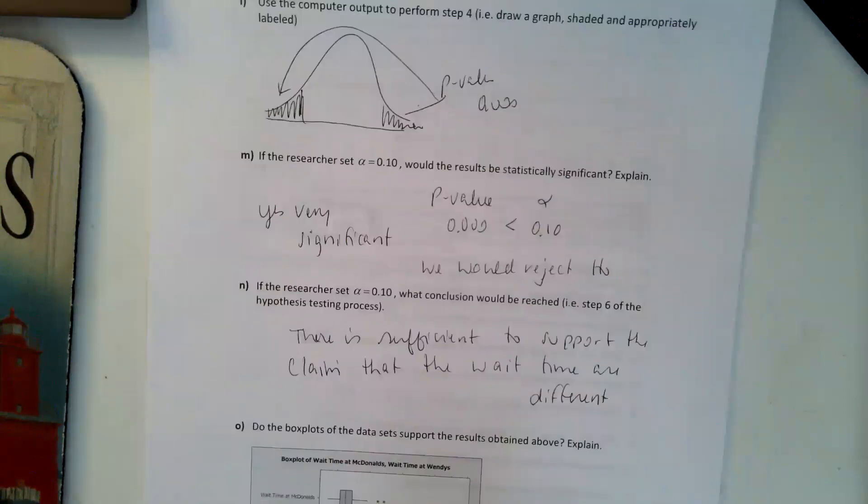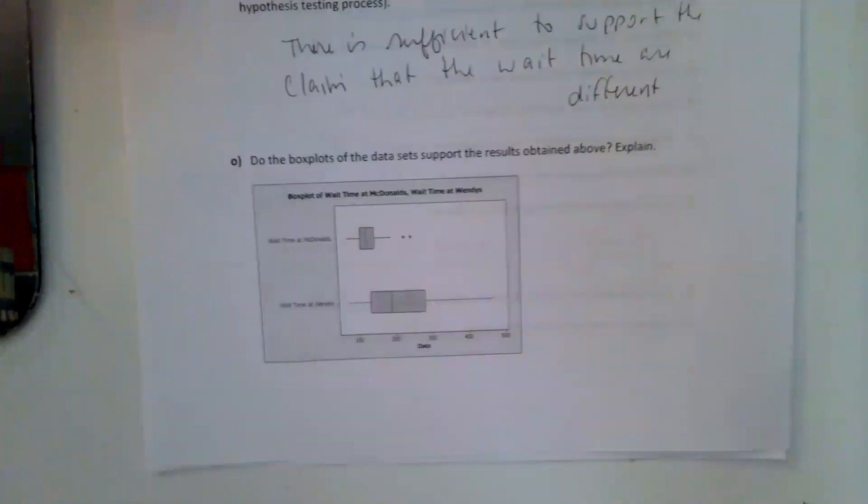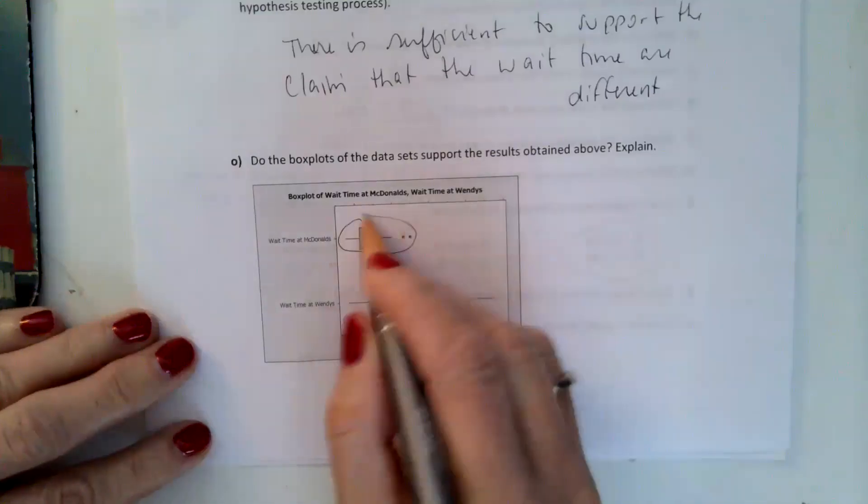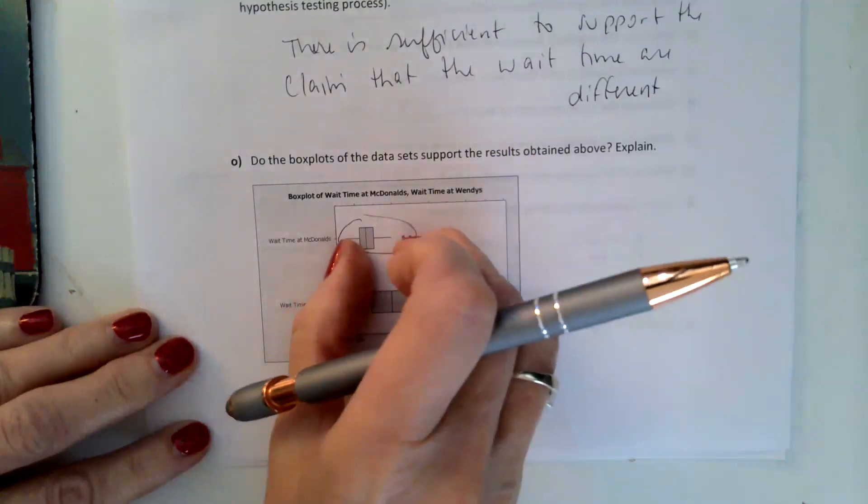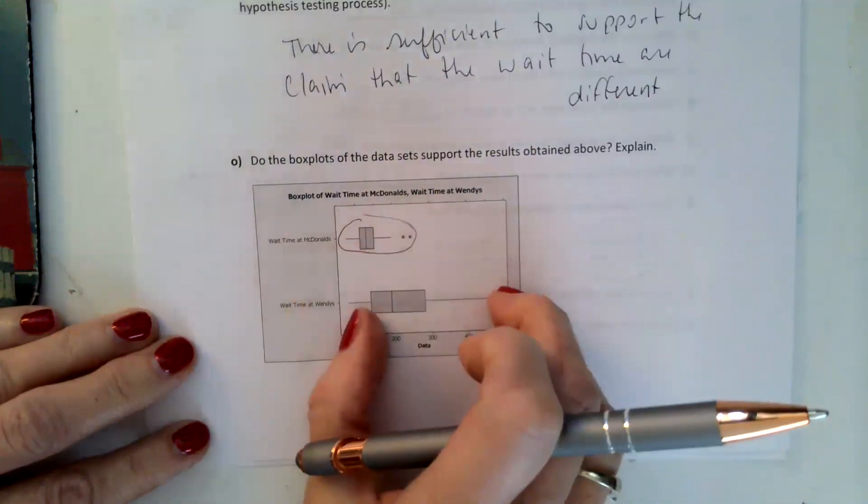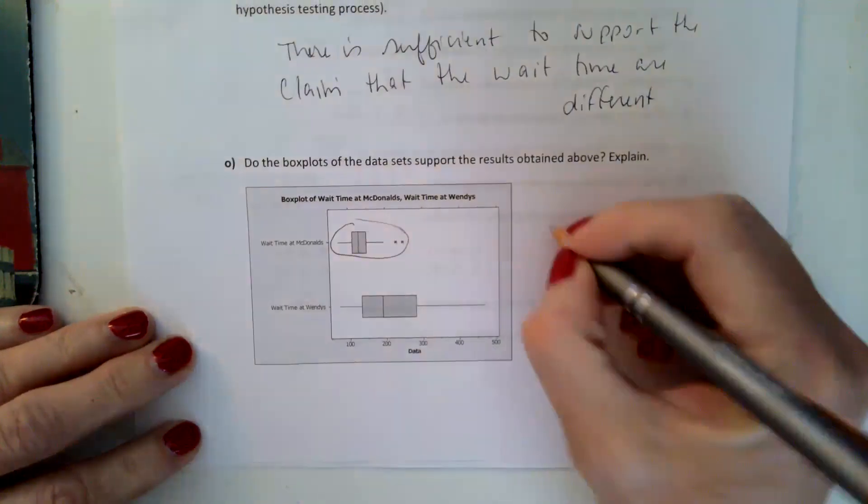And then O says, do the box plots of the data support the results obtained above? And I would say yes. And you can see that because McDonald's is very much lower and it's more smaller as far as the standard deviation compared to the wait times at Wendy's.